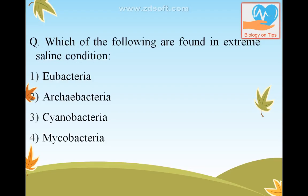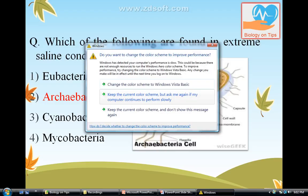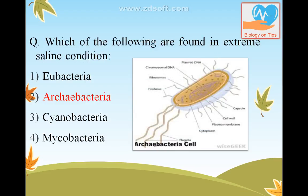Which of the following are found in extreme saline conditions? The answer is Archaebacteria. These bacteria have the ability to survive in harsh conditions due to the presence of branched lipid chains in the cell membrane, which reduces fluidity of the cell membrane.